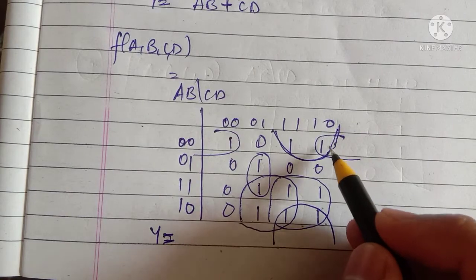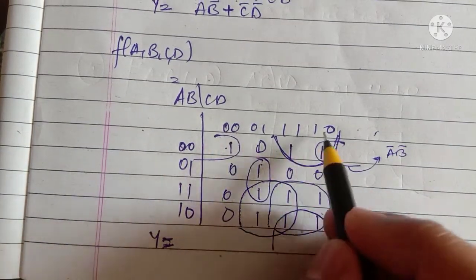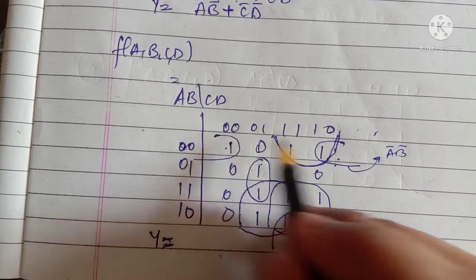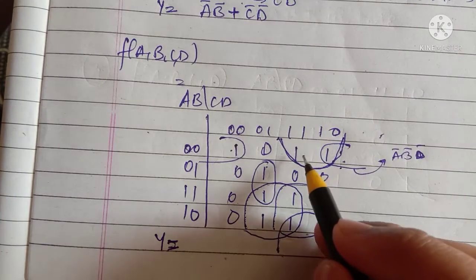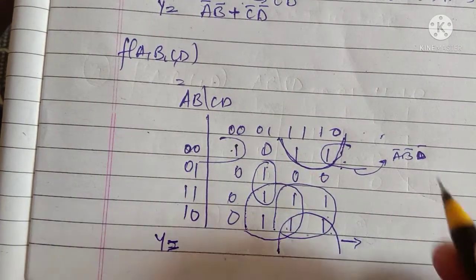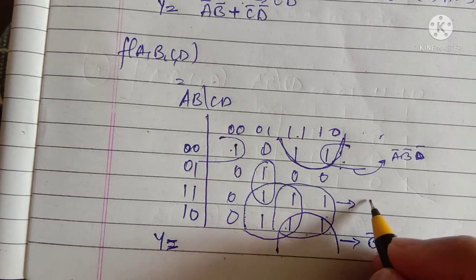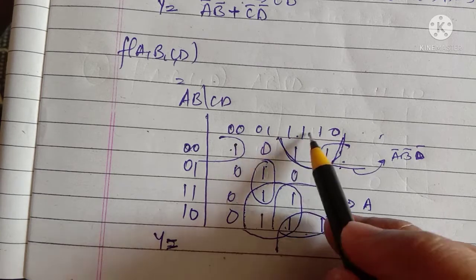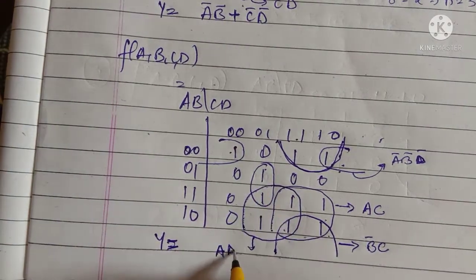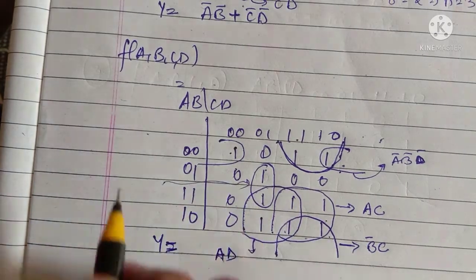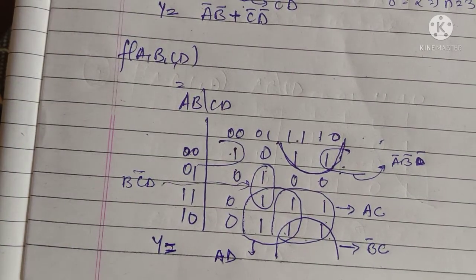For writing the expression, for this group corresponding to A-bar B-bar — take common: C is one and zero, and D is D-bar, so we write A-bar B-bar D-bar. For the four-variable group, the common part is B-bar and C, giving B-bar C. This group gives the expression A and C, so AC. Another group gives A and D, so AD. The remaining bit gives B, C-bar, D — so BCD-bar.